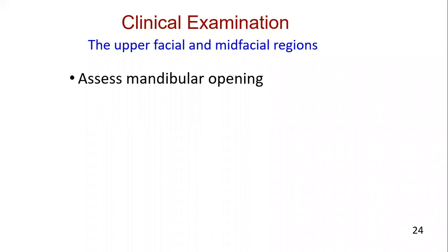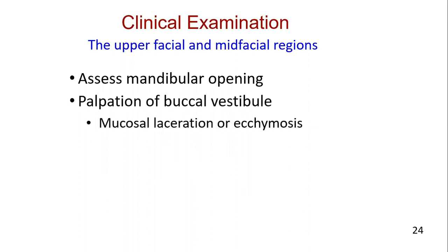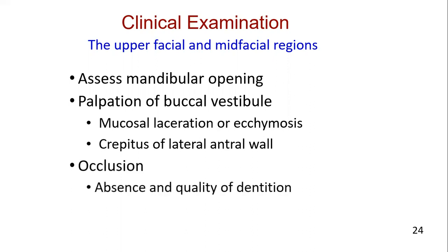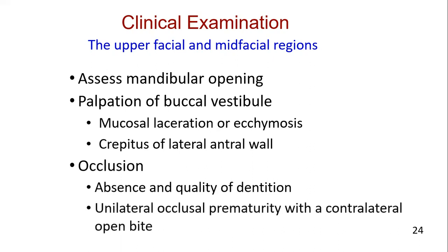Assess mandibular opening to check whether the coronoid is obstructed by a zygoma fracture. Intraoral inspection should include an evaluation of mucosal laceration or ecchymosis in the buccal vestibule or along the palate. When checking for zygoma complex or arch fracture, an index finger can be inserted in the maxillary vestibule adjacent to the molars while palpating and applying pressure superolaterally; bony crepitus or extreme tenderness requires further workup. Check the occlusion for loose or missing teeth and involvement of maxillary or alveolar fracture. Unilateral occlusal prematurity with contralateral open bite should raise suspicion for a jaw fracture.